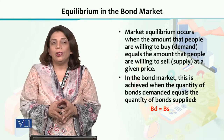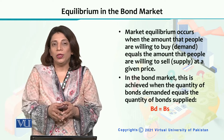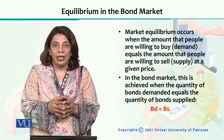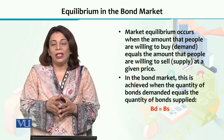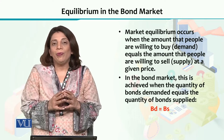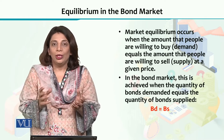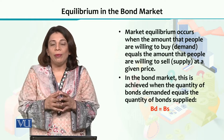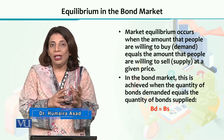We have already discussed the demand for a financial asset and the supply of a financial asset. Now we are going to talk about the equilibrium in the bond market. When you talk about a financial asset, physical asset, or currency linked in a free market, it is always determined by the interaction of demand and supply forces. Similarly, in the bond market, the value of a bond is determined by the interaction of demand and supply.